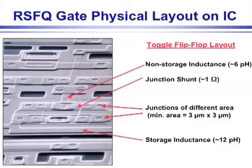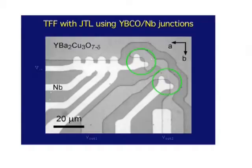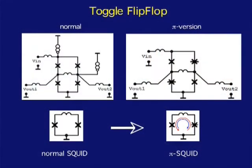An example of how you can use this pi phase shift effect is in superconducting electronics. The standard architecture for superconducting electronics is the so-called rapid single flux quantum logic. One element, for example, is the toggle flip-flop, the T flip-flop.